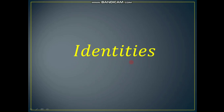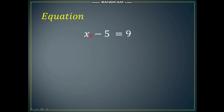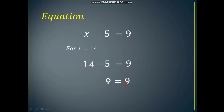Before we know what identities are, first let us have one equation: x minus 5 is equal to 9. In this equation, x is a variable. If we put x equal to 14, the equation becomes 14 minus 5 equals 9, and we get left hand side equal to right hand side. So this equation gets satisfied for x equal to 14.